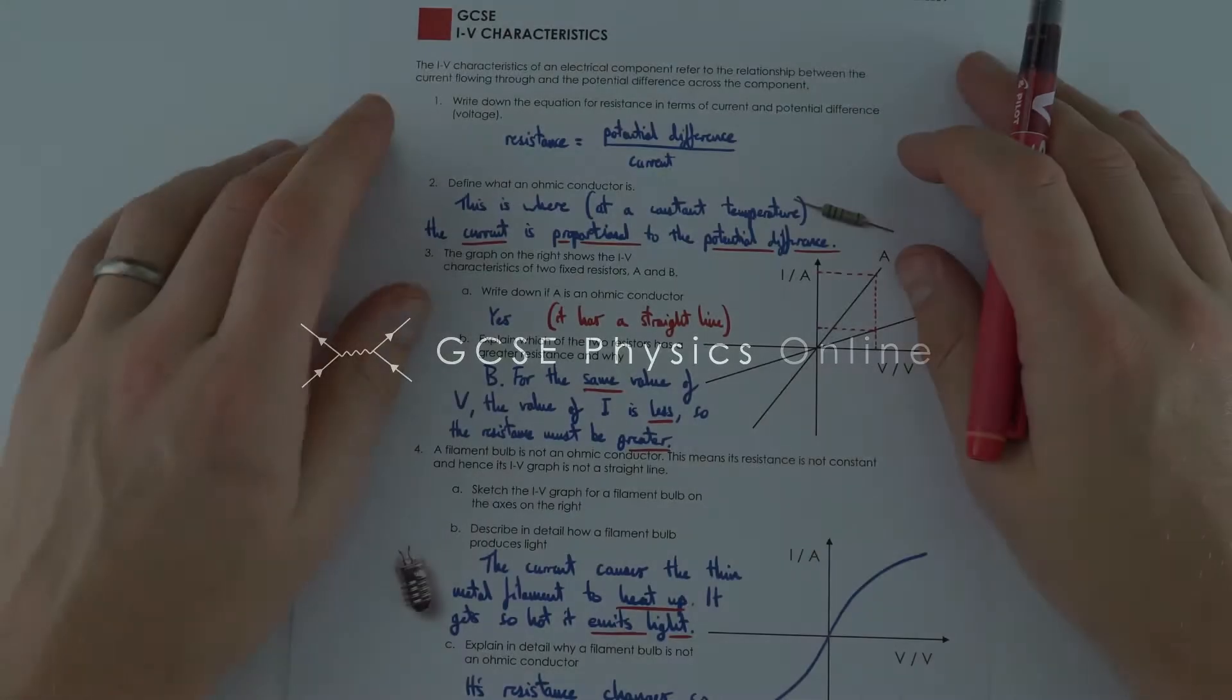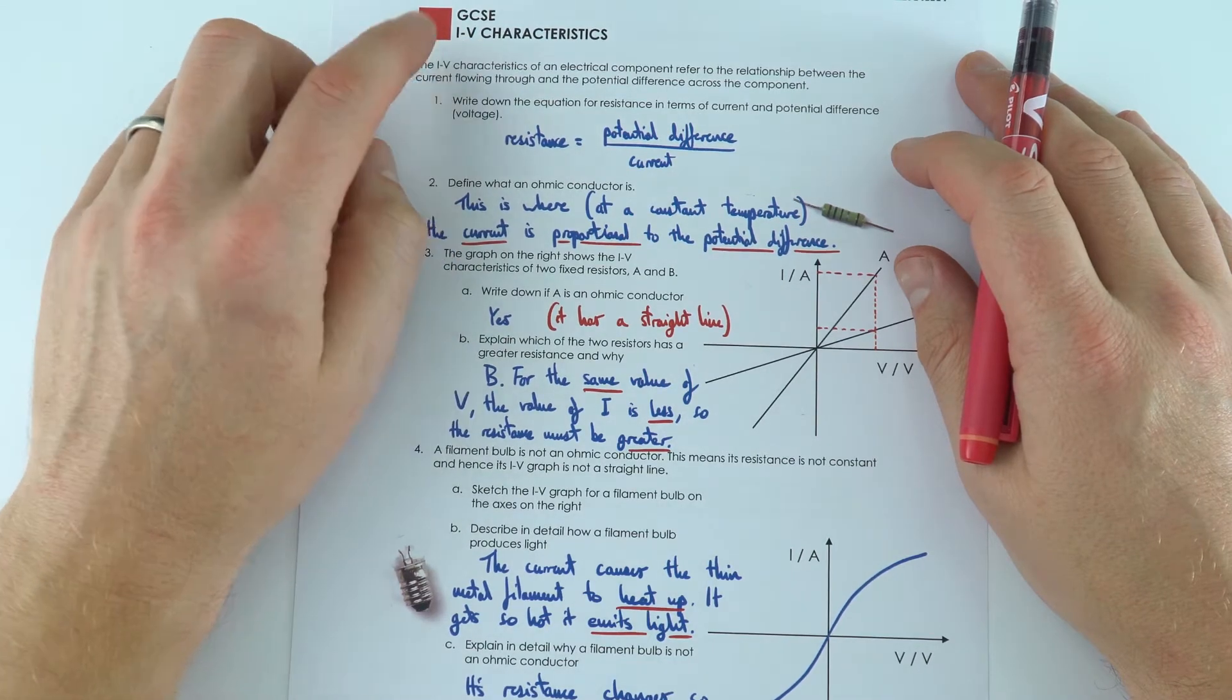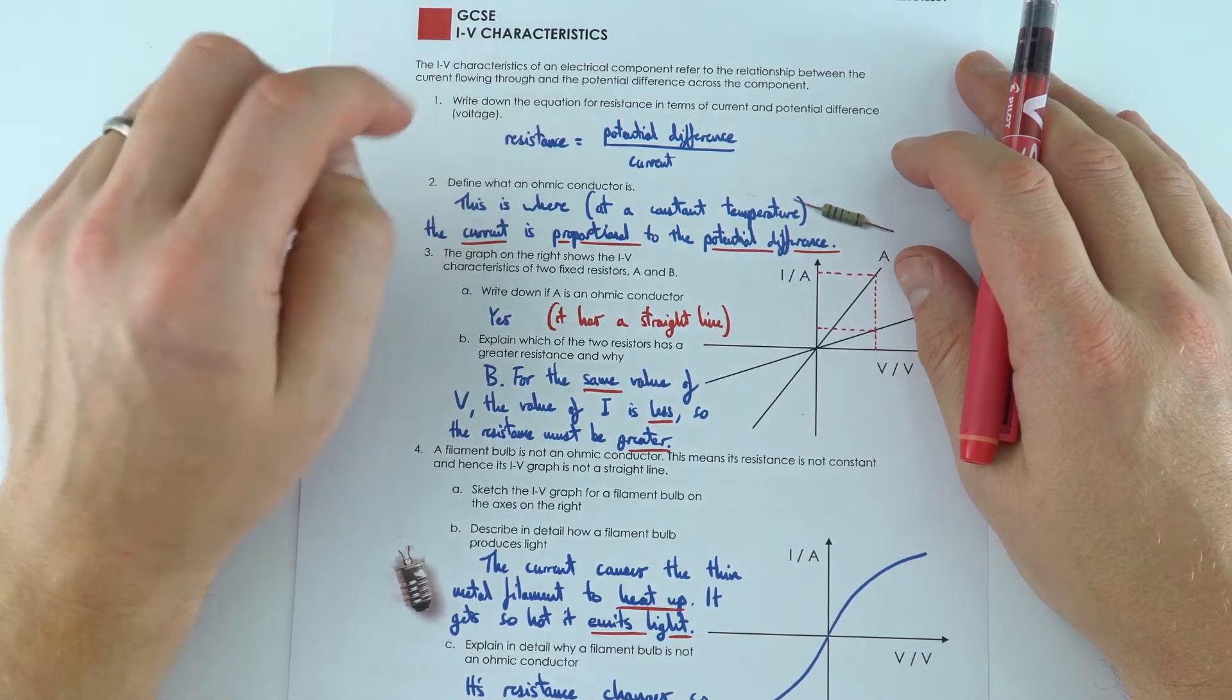So this worksheet was looking at the characteristics of different components and we often call these the IV or the current potential difference characteristics.